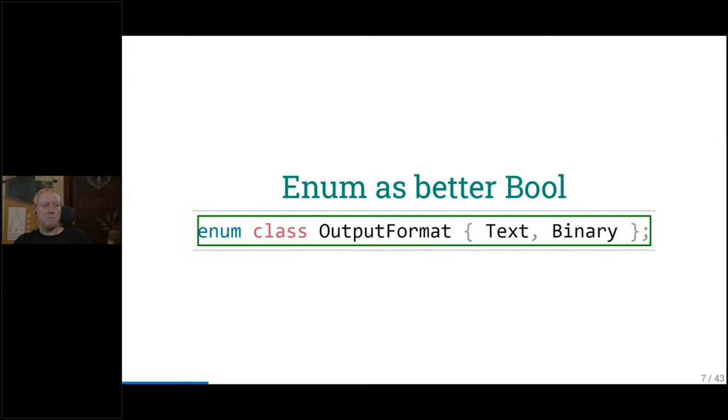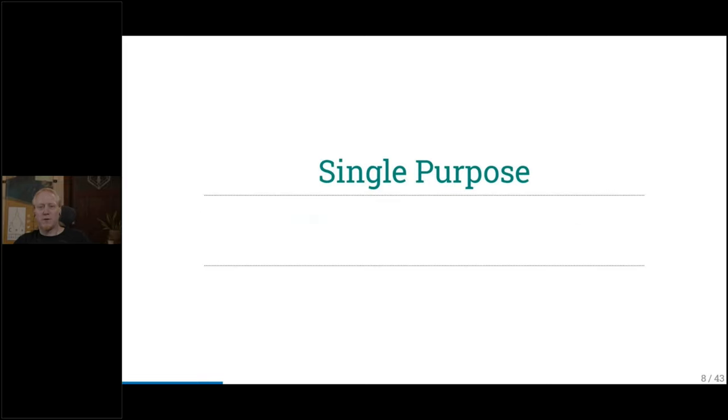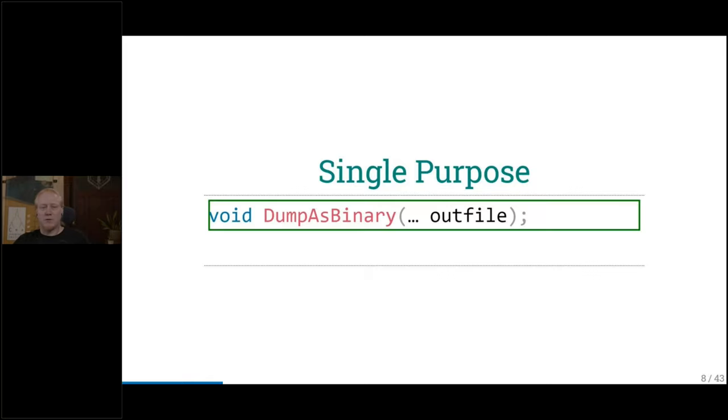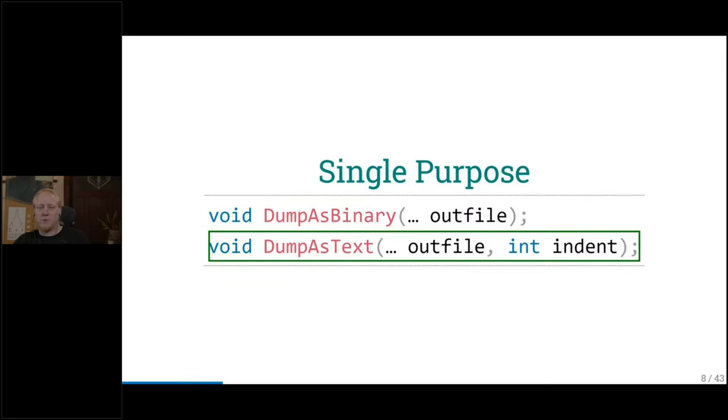And then there's another very common thing. If we have a function with a bool, maybe those two states of the function are not doing the same thing. We want to stick one single purpose in each function and each thing we do. Maybe it's a better idea to have a function that dumps as a binary and another one that dumps as a text. In this case that I showed you, there was an intent argument that was used for both. But I would suspect without reading any code that the intent indentation is not relevant for the binary format. So why do we have one function signature for both? Wouldn't it be better to have one function that does one thing well?